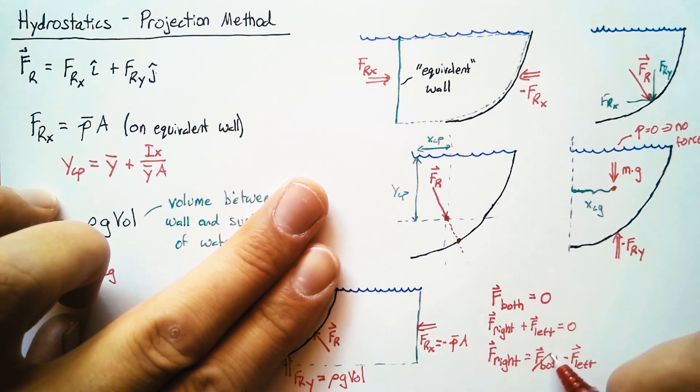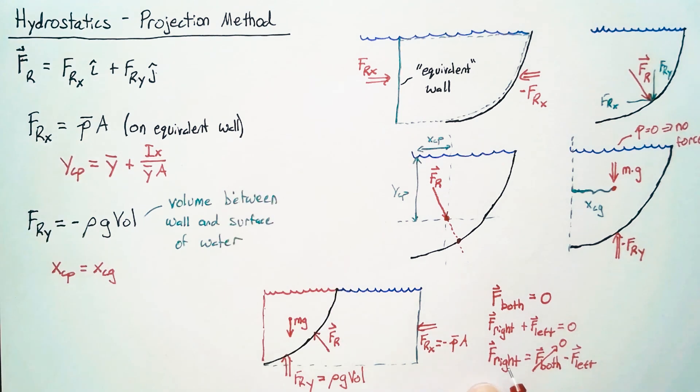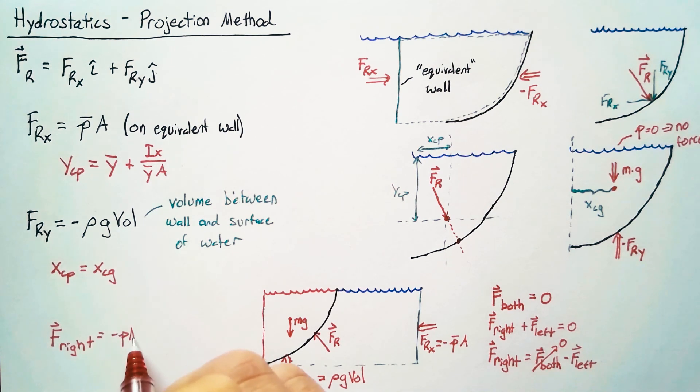That goes away and so the force on the right hand side is just exactly the opposite of the force on the left. We get that the force on the right hand side here is going to be a negative p bar a in the i direction plus rho g vol in the j direction.